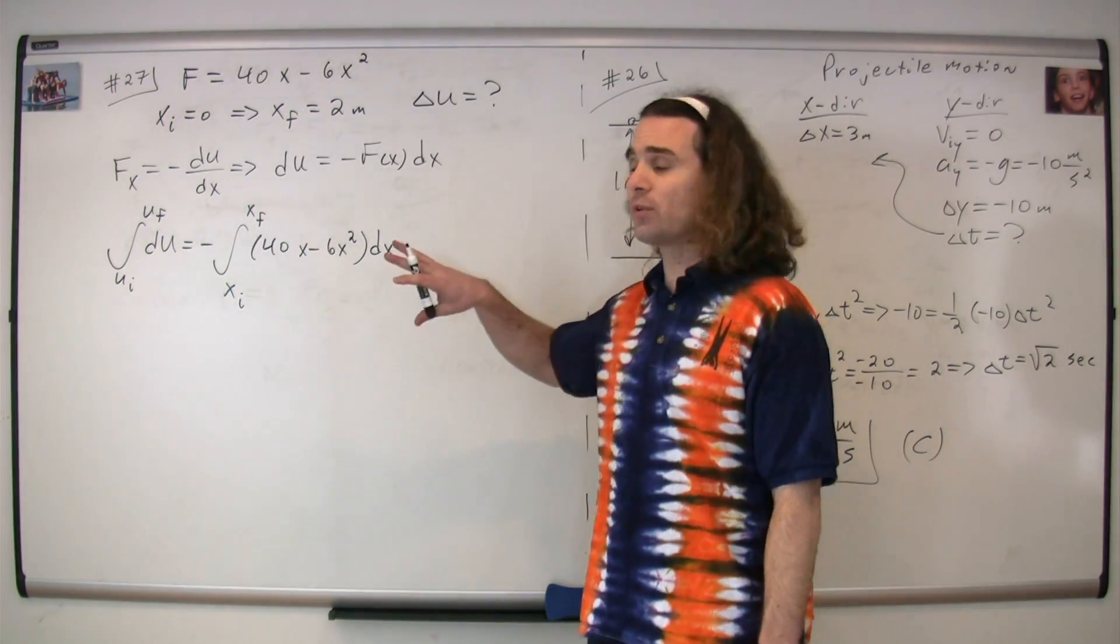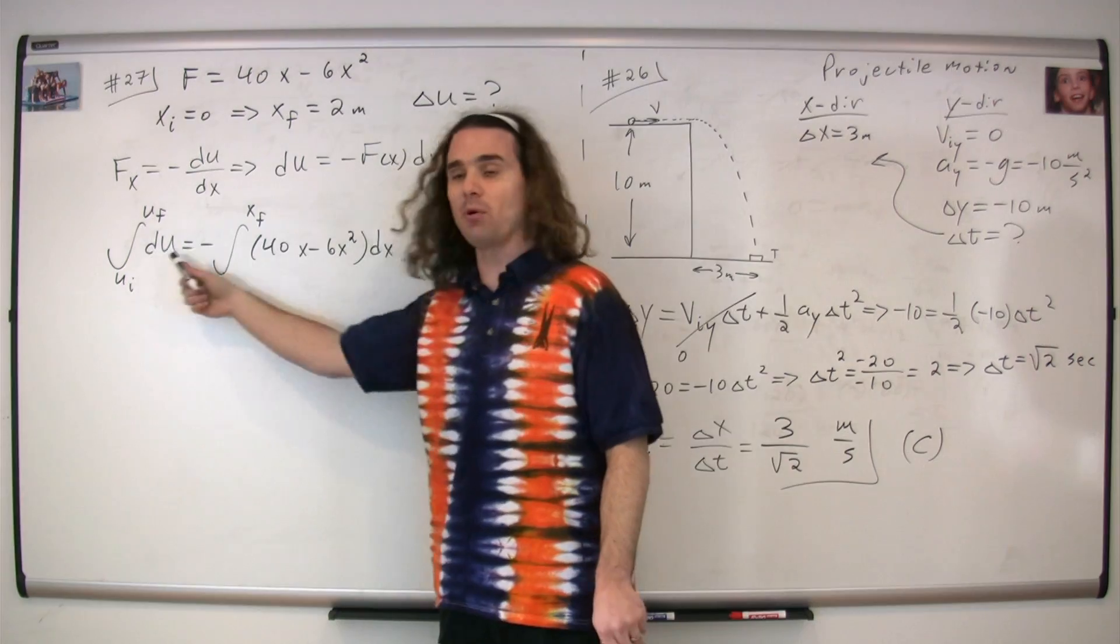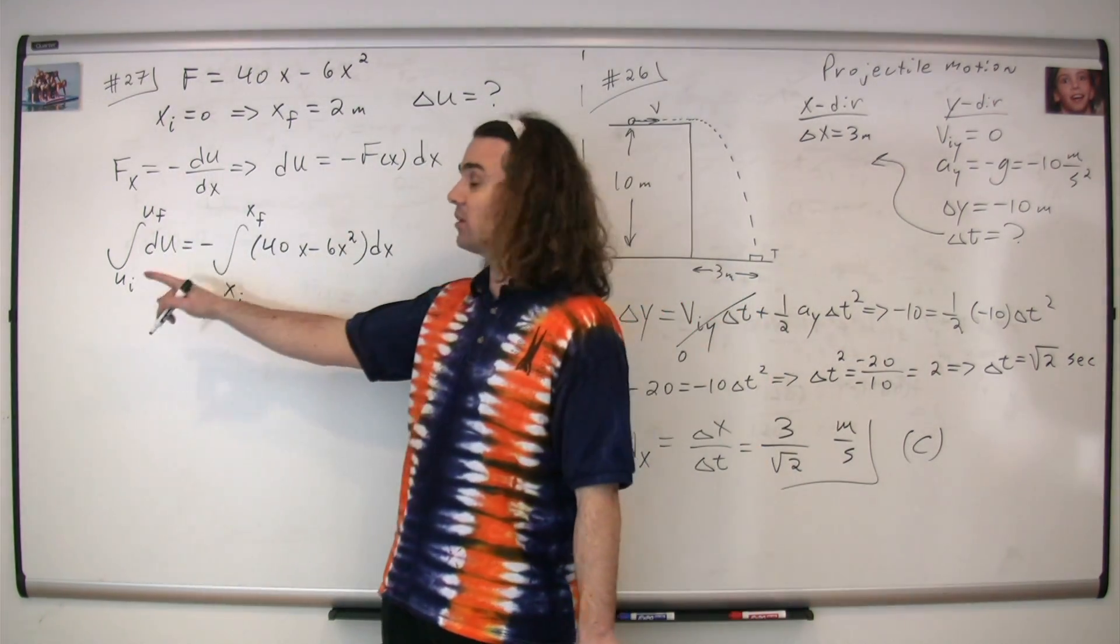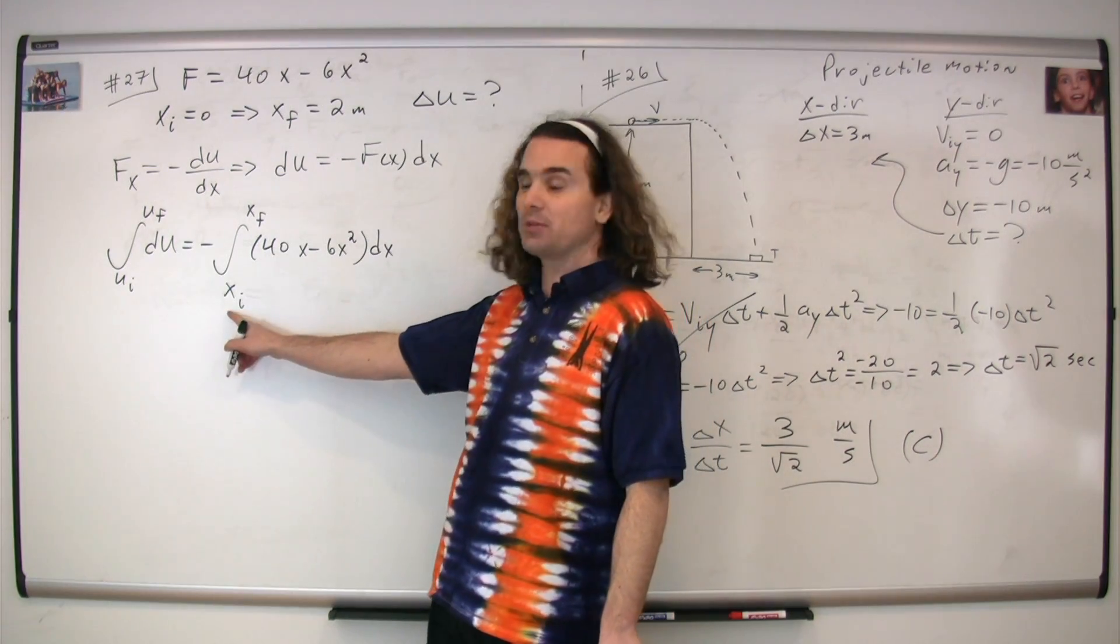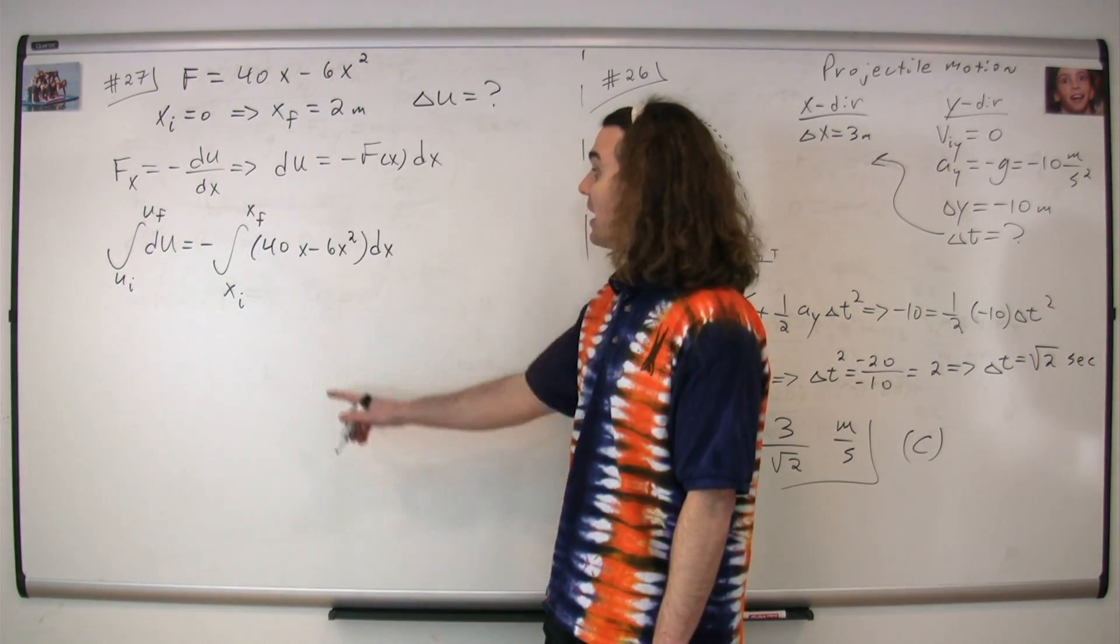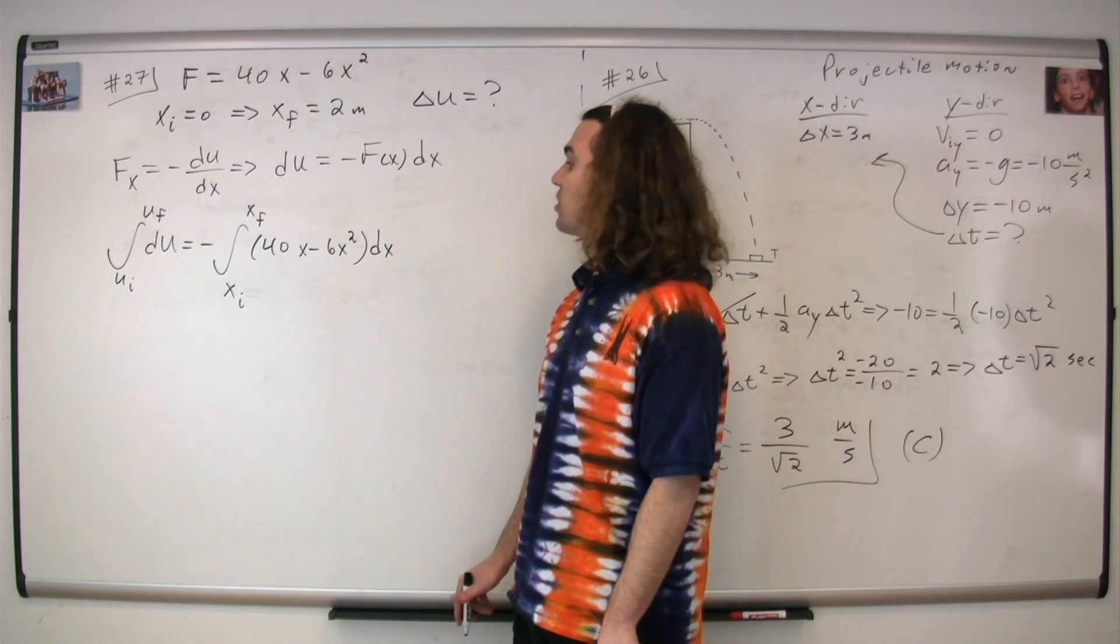Now what we're going to do with that is we're actually going to rearrange it using an integral. So we multiply by dx and then take the integral of both sides. So we take the integral from initial potential energy to final potential energy on the left, and from initial position to the final position on the right, and I've substituted in the equation for our force as a function of position.